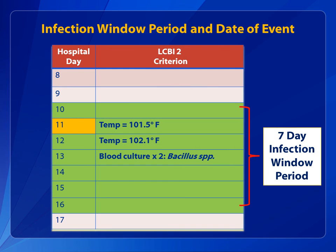Here is an example of how to identify the infection window and set the date of event. The blood culture on day 13 sets the center point of the infection window. The infection LCBI-2 definition is met, and hospital day 11 is the date of event — the date the first element, fever, is used to meet the LCBI-2 criterion for the first time within the seven-day infection window period.